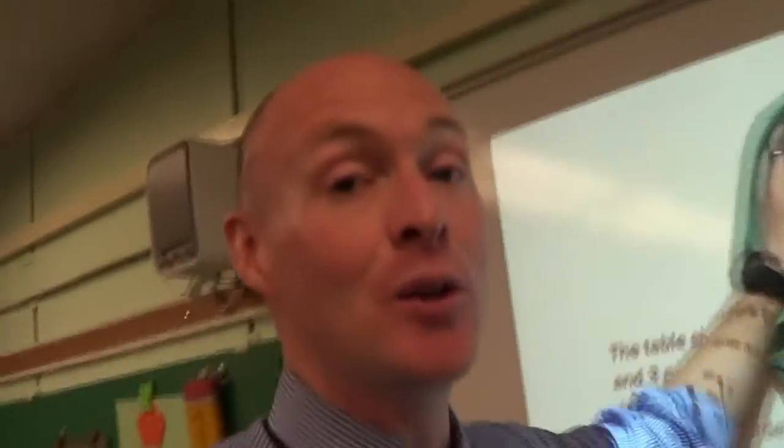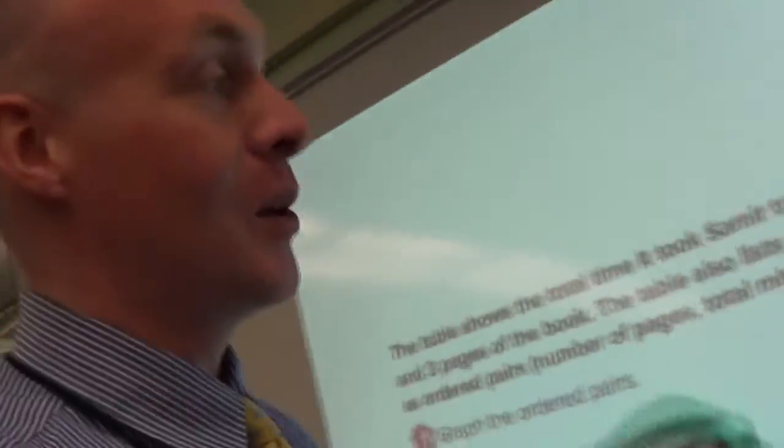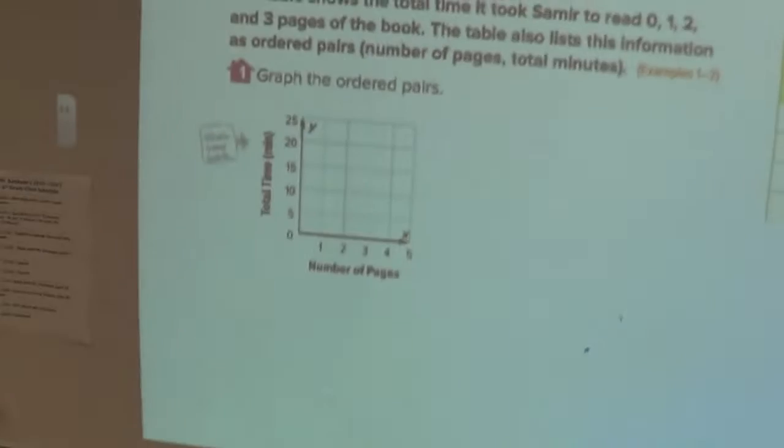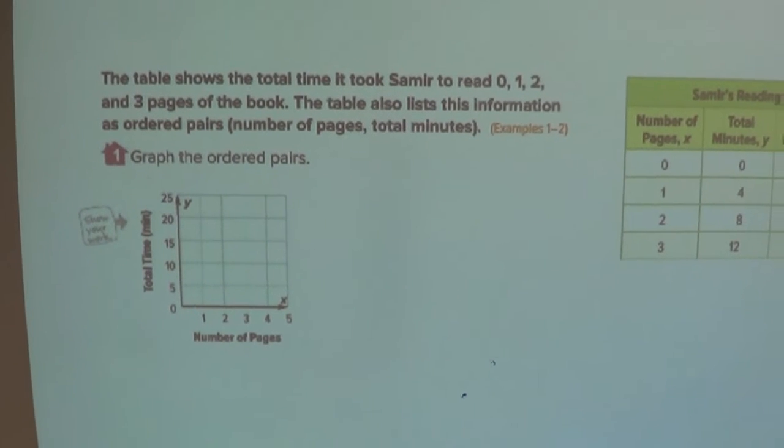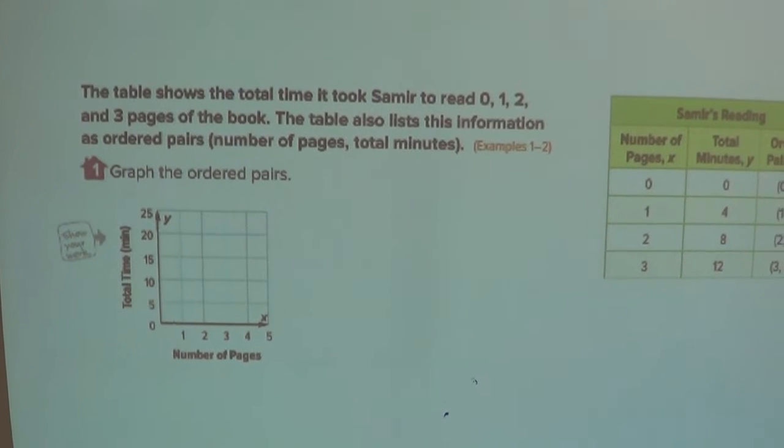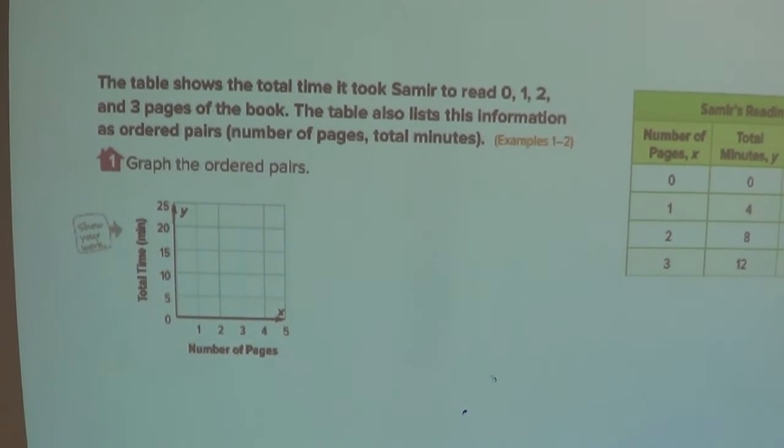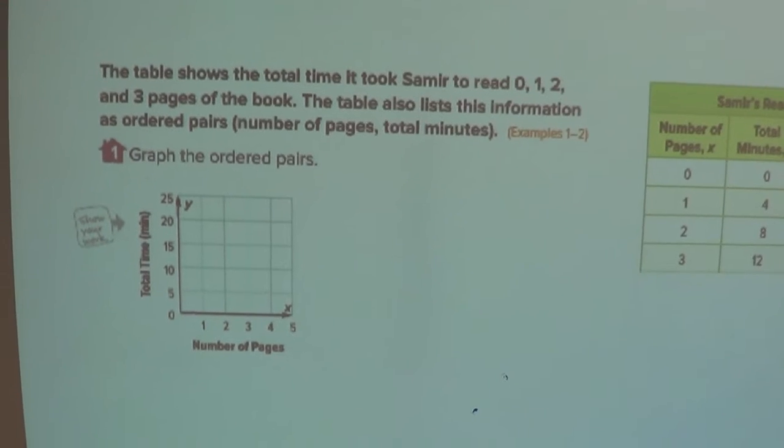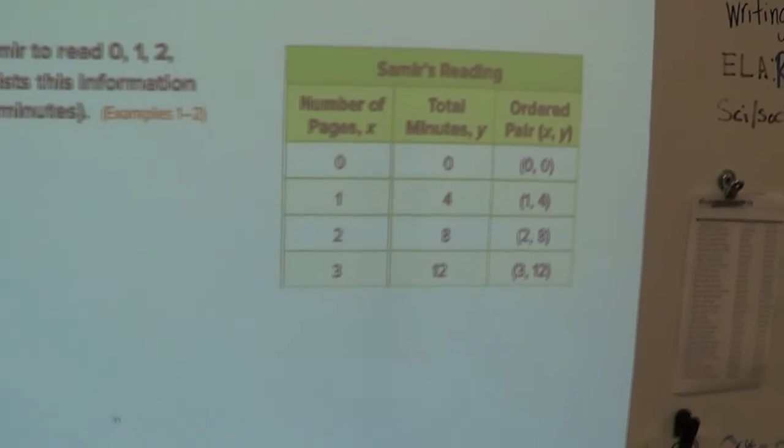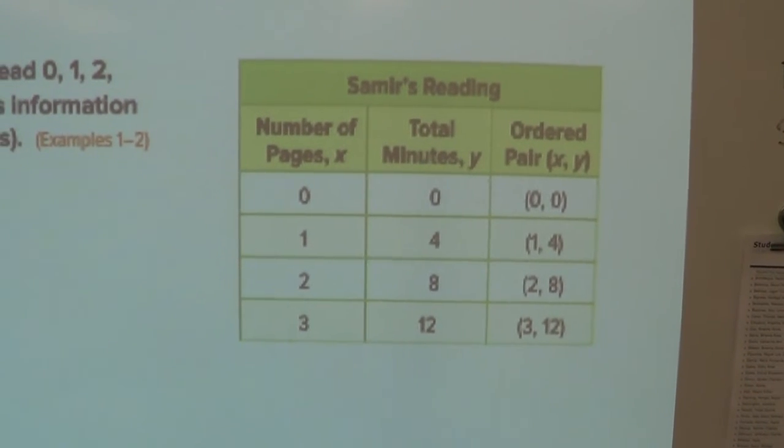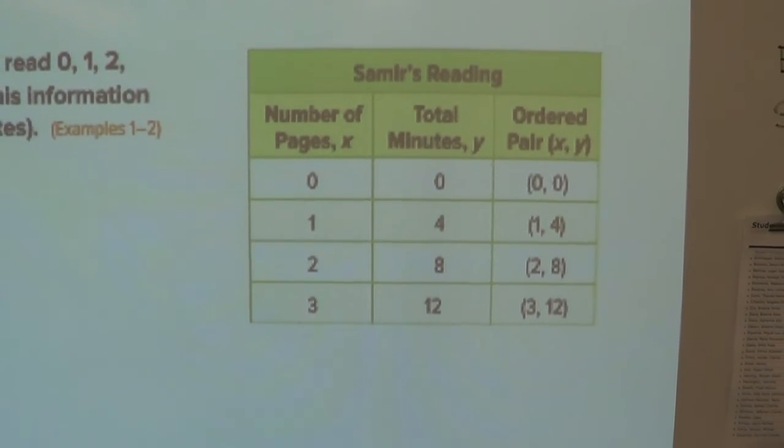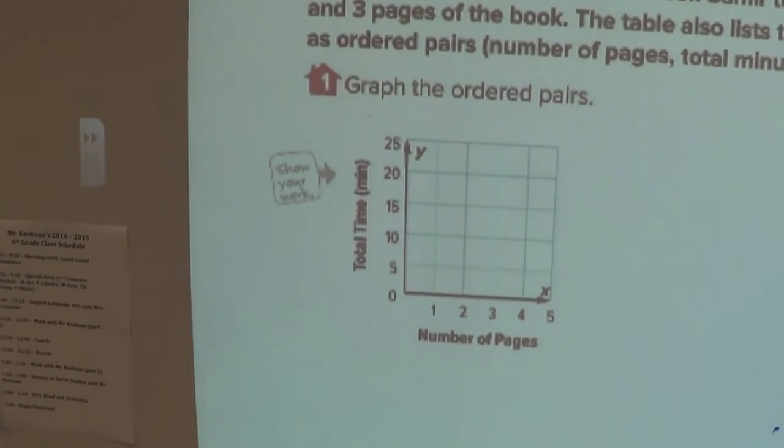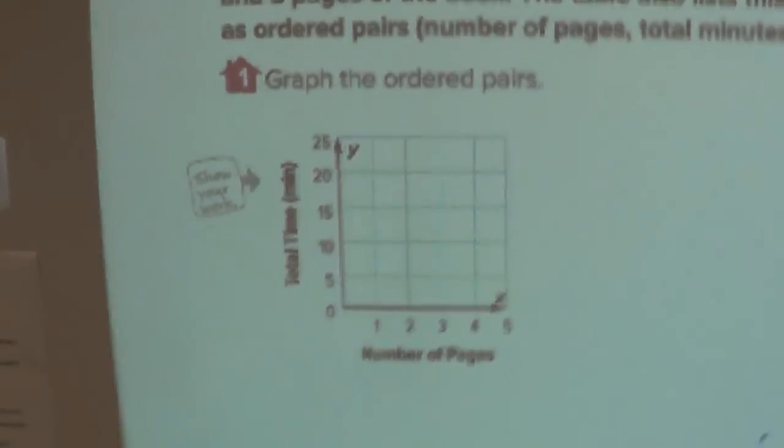Now, I'm going to walk with you as I erase this. Now, I think on your paper, it gets kind of small. So I'm going to bring the camera up close so you can get a look at what the question reads. The table shows the total time it took Samir to read zero, one, two, and three pages of a book. The table also lists the information as ordered pairs: number of pages, total minutes. Graph the ordered pair. So what you're going to do is you're going to go over here. Oh, look at that, it's so nice. It gives you the ordered pairs for you. You're going to look at the ordered pairs, you're going to take that information and you're going to put it on that graph right there. Bring the completed graph to class and we'll see you tomorrow.